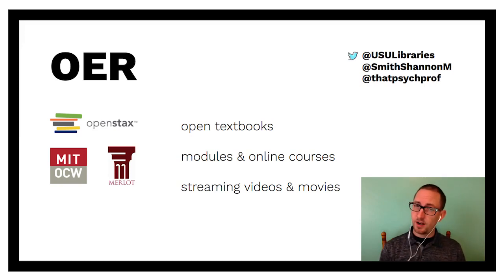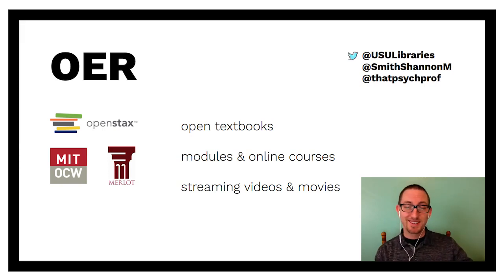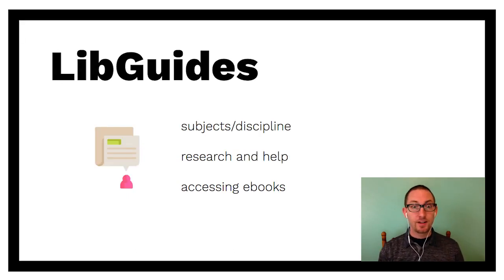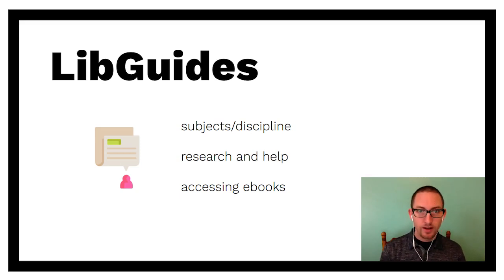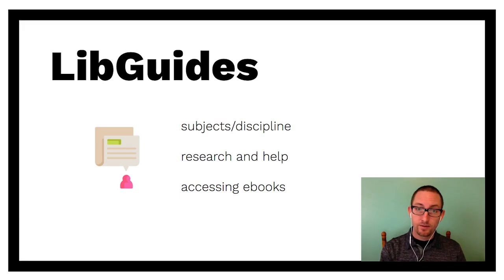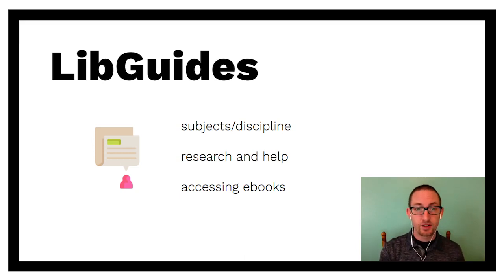Our librarians are there to help us find these resources and match what we're trying to do in class with what exists in databases. Some examples are Open Stacks, MIT OpenCourseWare, or MERLOT which has lots of great videos. We also have LibGuides available through the library, organized by subjects and disciplines, with research help and specific guides on how to stream videos from the library or access ebooks. We can utilize a lot of these guides that have already been created.